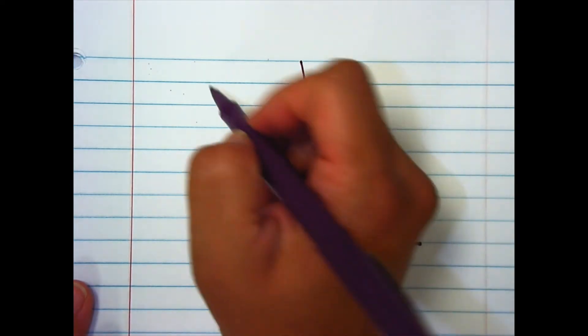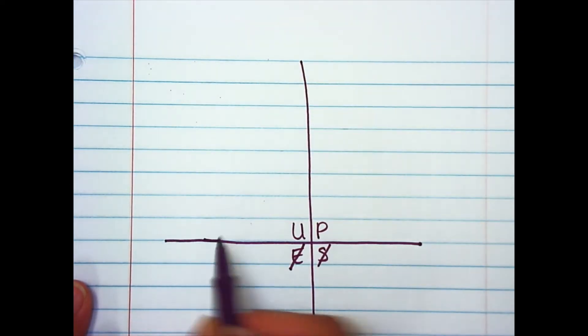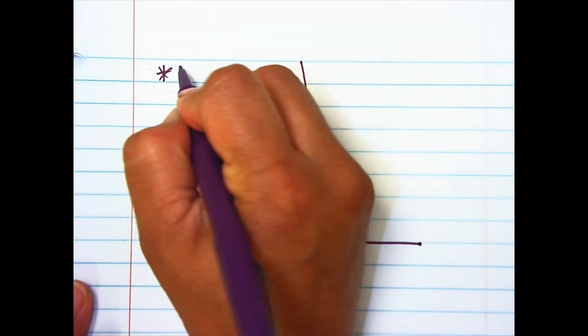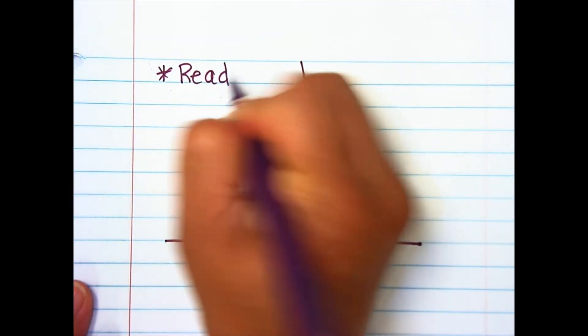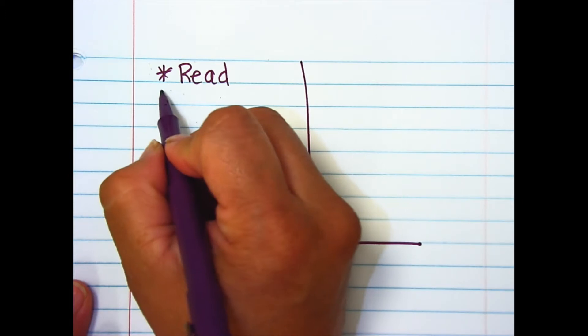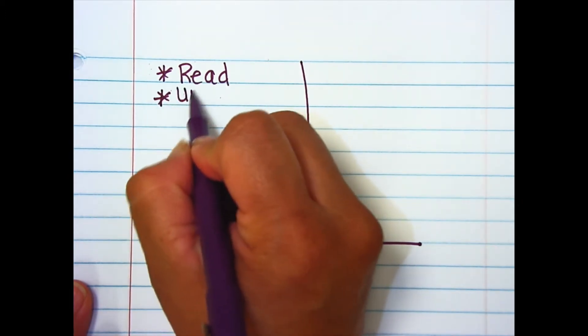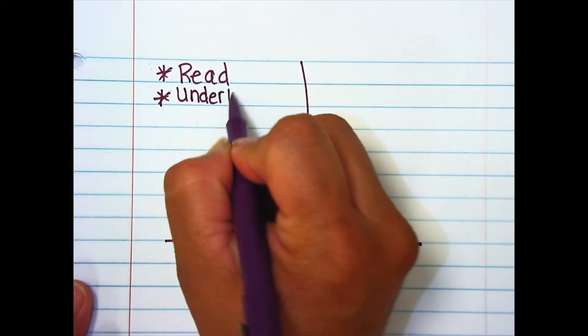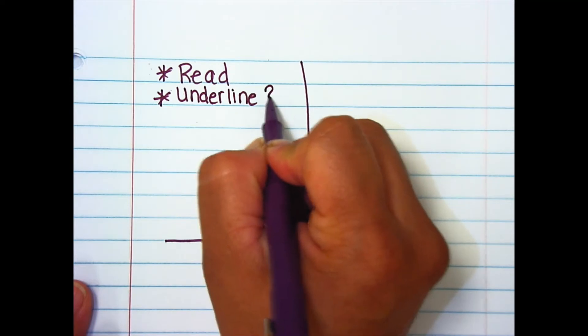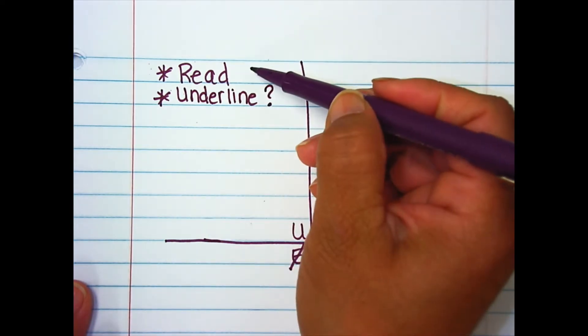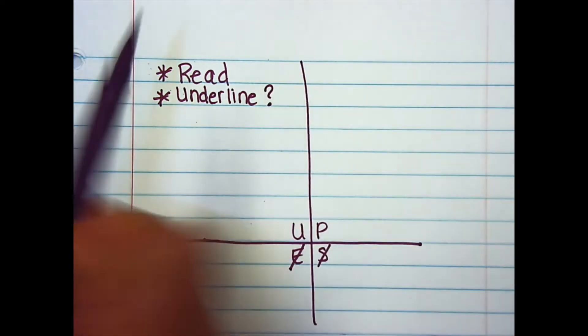So our first step in understanding our word problem is to read the problem. After you read the problem, you underline the question. Make sure that as you're reading the problem, you are picturing what is happening in the problem because it's like a story.